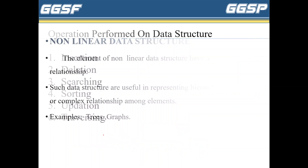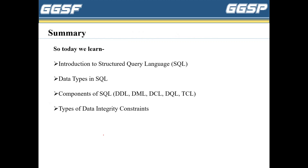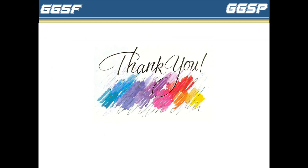Next, we see which operations can be performed on data structure. The operations are: insertion, deletion, searching, sorting, updation, and traversing — meaning visiting each element of the data structure. These are the operations we perform on data structures. Thank you for watching. Next, we will learn the next part of unit 1. Please subscribe to my channel.